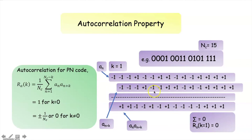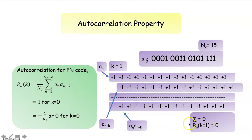When there is a shift of one bit position (k = 1), we find the product for each bit position — for example, minus 1 times minus 1 gives plus 1, plus 1 times minus 1 gives minus 1, and so on. Taking the sum of these values we get 0, so the autocorrelation is equal to 0 when k is equal to 1.